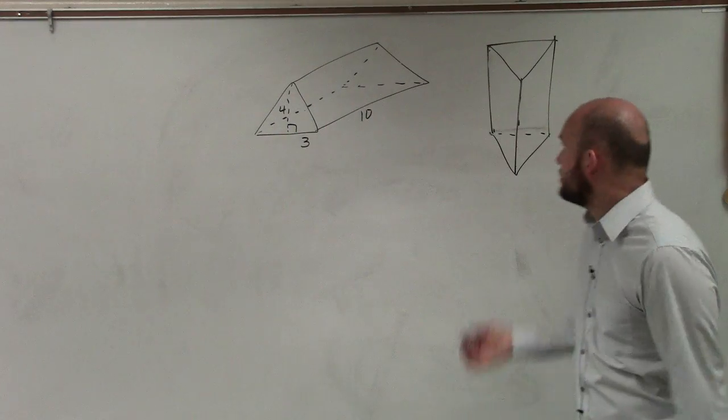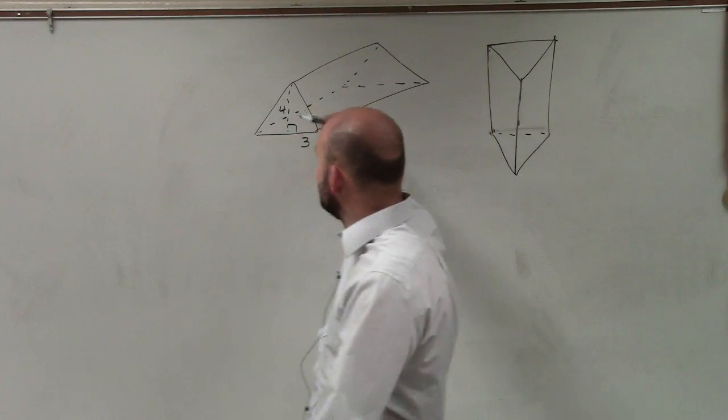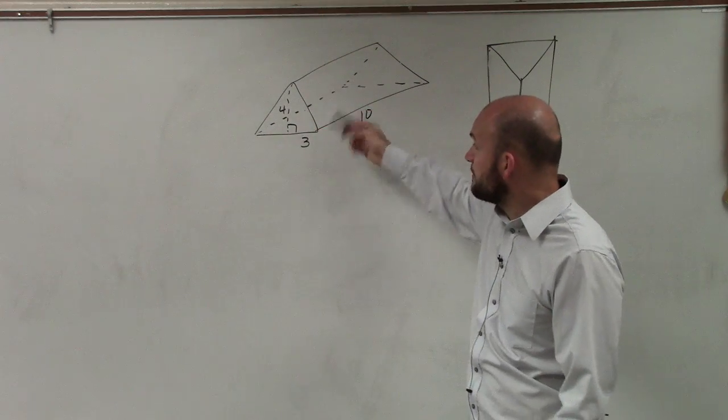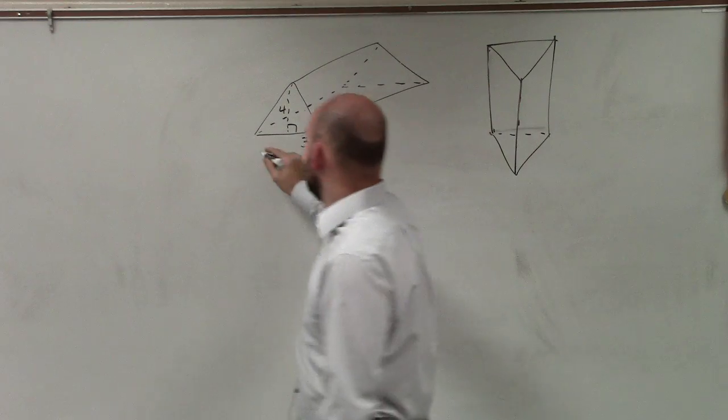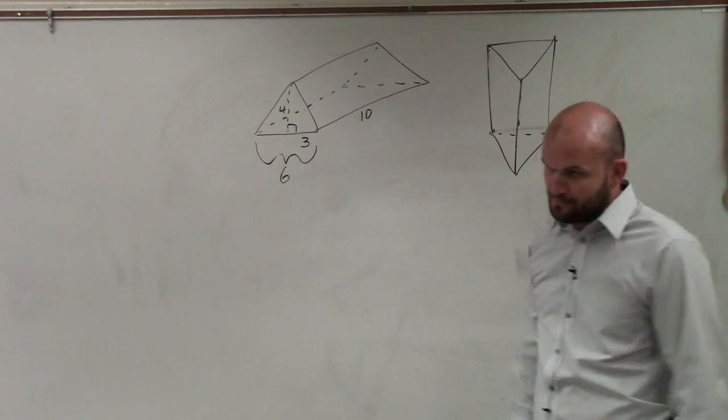All right. So sorry, I forgot to label the dimensions of this triangle. So you can see that the height of the triangle is 4. Half of the triangle's length is 3. That means the total length is going to be 6. And then this length is 10.